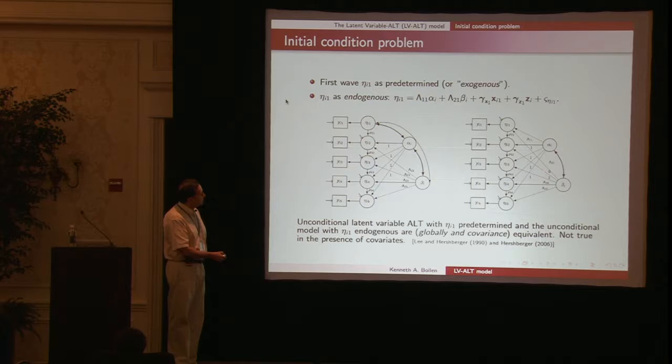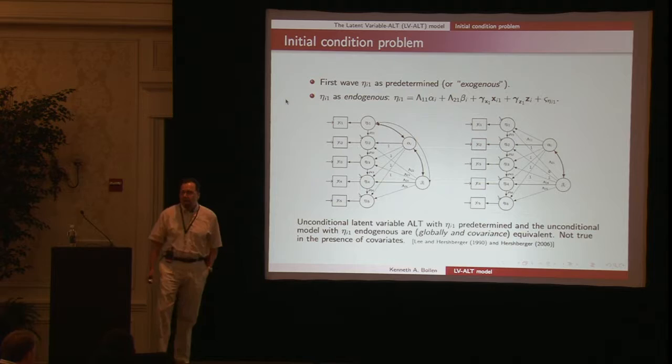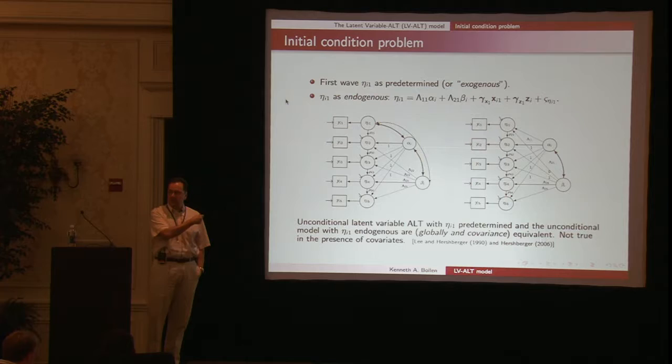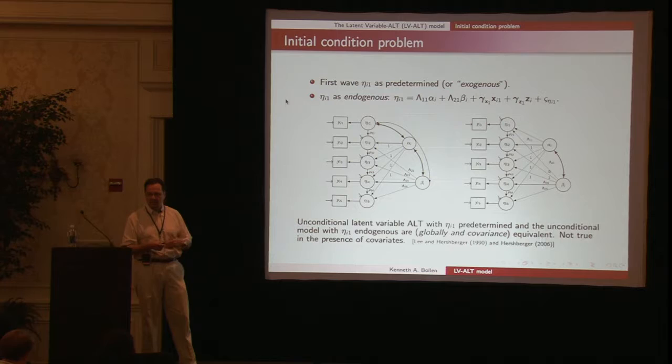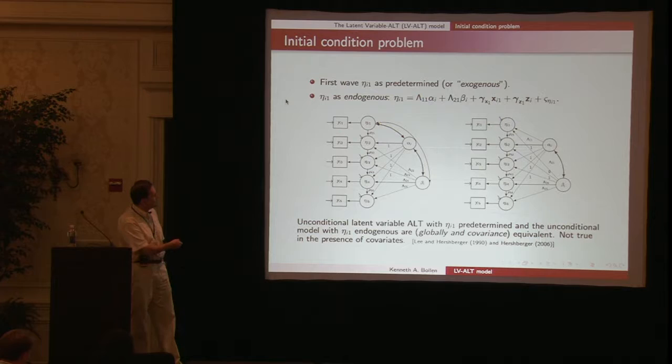Another way to represent the model treats eta_i1 as a function of the random intercept and slope. In social science terminology, this is now an endogenous variable, determined by other variables in the system, whereas before we treated it as predetermined exogenous. These two forms are empirically indistinguishable. You'd get identical likelihood functions and fit measures. I present both because depending on the model we want to specialize to, one form is easier as a starting point.